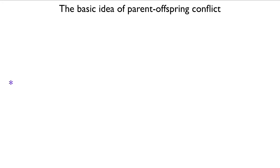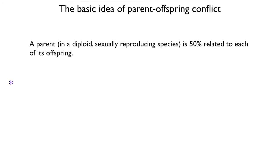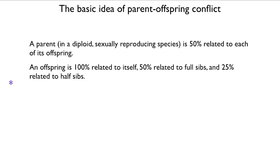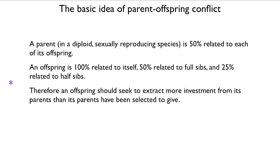The basic idea of parent-offspring conflict is that a parent in a diploid, sexually reproducing species is 50% related to each of its offspring. However, an offspring is 100% related to itself, 50% related to its full siblings, and 25% related to half-siblings — that is, offspring of the same mother but a different father.